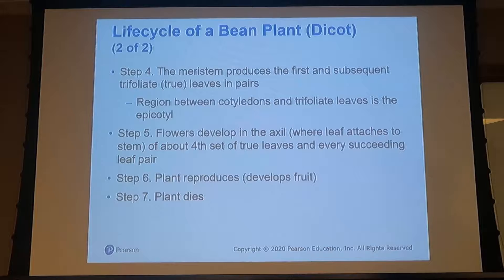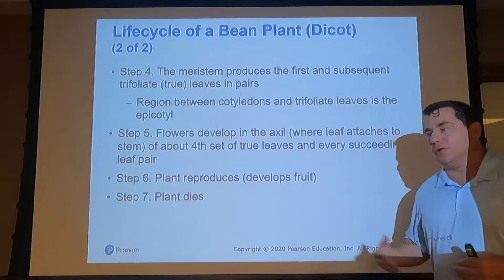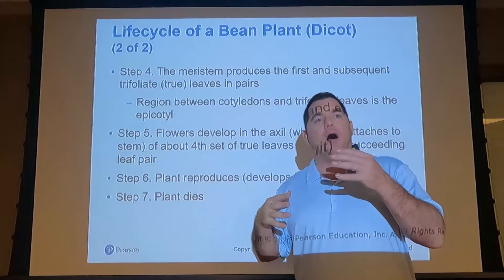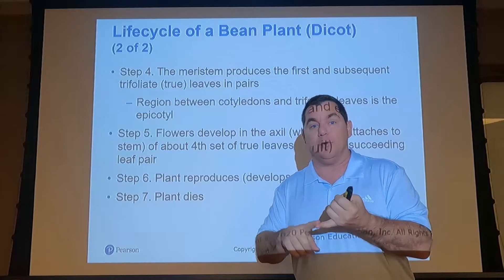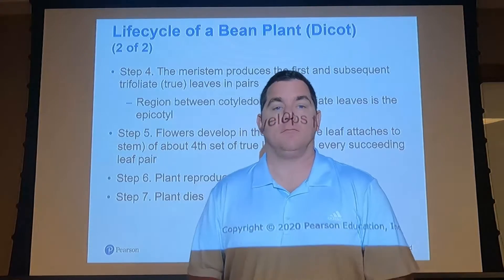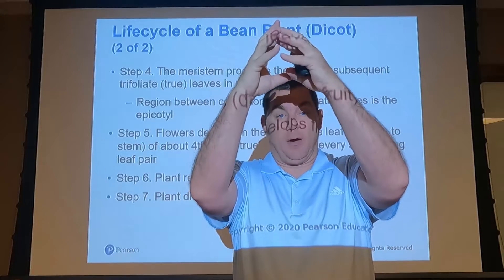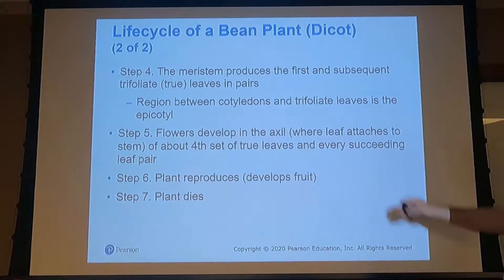Next, the meristem produces more leaves — trifoliate or true leaves — in pairs, characteristic of dicots. The plant then develops flowers, reproduces, and dies. So there is a difference in the middle steps of plant growth and development between monocots and dicots, but broadly: imbibe water, produce roots, then shoots, leaves, flowers, fruit, and the plant dies.